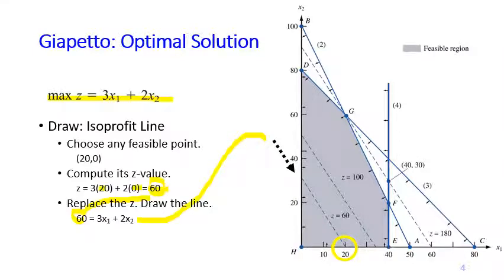And then you drag it parallel to that direction because this is the maximization problem. So you drag the line until it touches the maximum point in the feasible region, which is point G. So G is the optimal solution for the Giapetta problem.